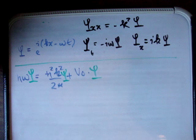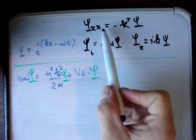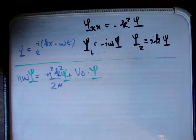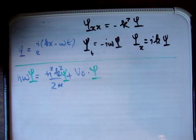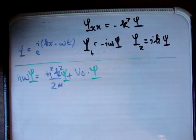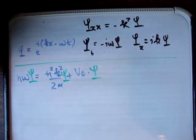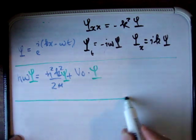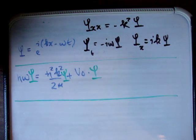The derivatives he decided to look at were the second derivative with respect to x, and the first derivative with respect to time. Basically what he tried to do was ask: what do I need to multiply the second derivative of my wave function by in order to get h-bar squared k squared over 2m? Then he asked: what do I need to multiply the first time derivative of my wave function by in order to get h-bar ω? He wanted equivalent expressions — he just wanted to use these differentials in the Hamiltonian.